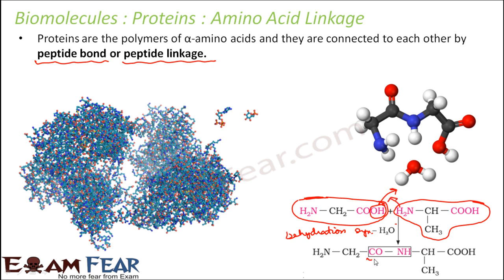What remains is CO on one side and NH on the other side. A bond is formed between CO and NH, and this bond is known as a peptide bond. The bond between CO and NH is called a peptide bond, and the entire structure formed is a protein. So a protein is formed by dehydration synthesis where water is pulled out, and the bond formed is called a peptide bond or peptide linkage.